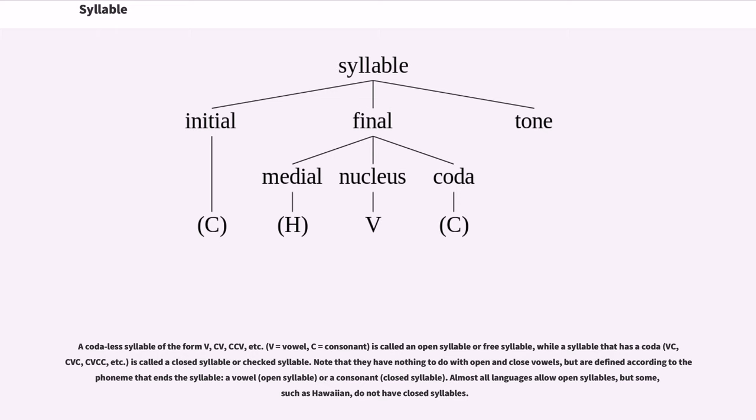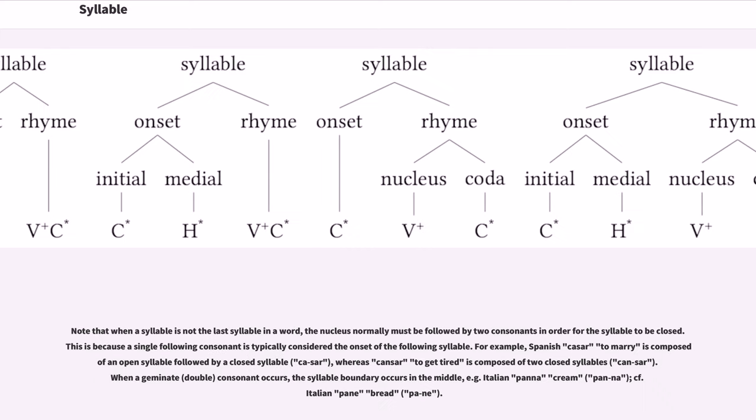Almost all languages allow open syllables, but some, such as Hawaiian, do not have closed syllables. Note that when a syllable is not the last syllable in a word, the nucleus normally must be followed by two consonants in order for the syllable to be closed. This is because a single following consonant is typically considered the onset of the following syllable. For example, Spanish casar, to marry, is composed of an open syllable followed by a closed syllable, whereas cansar, to get tired, is composed of two closed syllables. When a geminate consonant occurs, the syllable boundary occurs in the middle, for example Italian panettone, cf. Italian pane, bread.